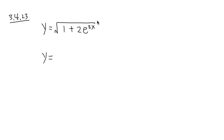So the idea is, the outside box is the square root of something, so the derivative of the square root of something is going to be 1 over 2 square root of exactly the same thing.